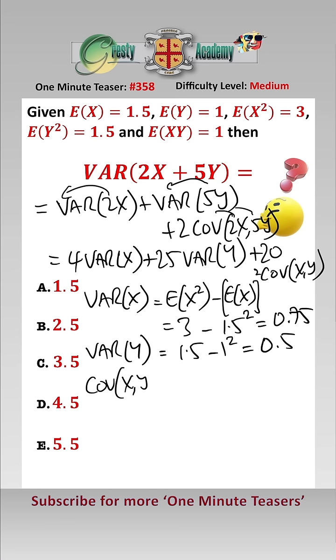And the covariance of X and Y is equal to E(XY) minus E(X) times E(Y), which equals 1 minus 1.5 times 1, which is minus 0.5.